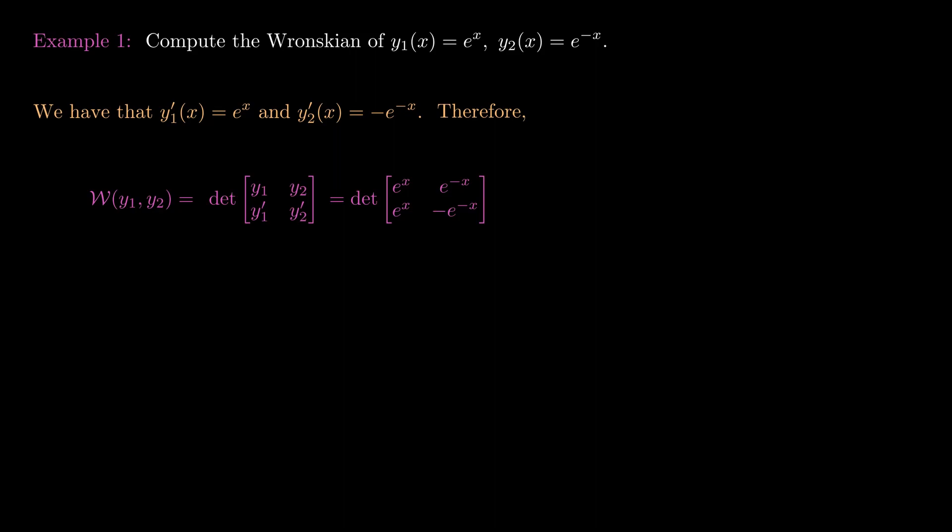Elementary calculations tell us that we get e^x times minus e^(-x) minus e^x times e^(-x). Of course the first term is just minus 1, and then we subtract 1 again.